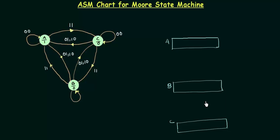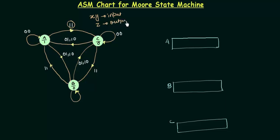This is going to be easy, but there is one thing to be careful about: the input is 2-bit here. The input is X, Y — this is the 2-bit input — and the output is Z. As the input is 2-bit, we have four possible conditions: 00, 01, 10, and 11.